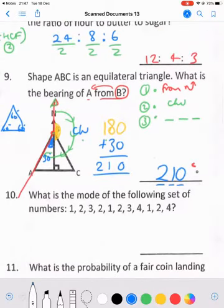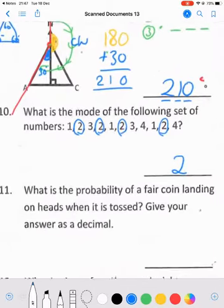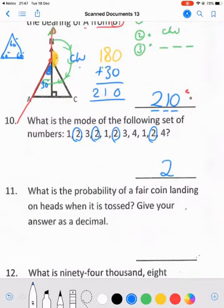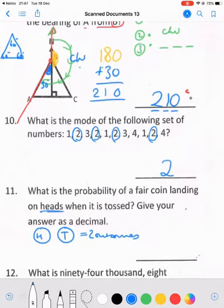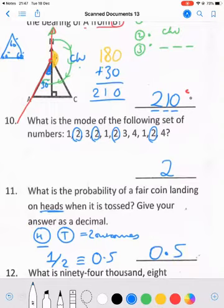Question number 10: What is the mode of the following set of numbers? The mode is the number that occurs the most often. In this case we have 2 which happens once, twice, three times, and four times, which is more than any other number. So the mode is 2. Question number 11: What is the probability of a fair coin landing on heads when it is tossed? Give your answer as a decimal. If you have a fair coin we have a head or a tail, so there's two outcomes. The probability that will be head is 1. So it's 1 out of 2, a half, and a half is equivalent to 0.5.